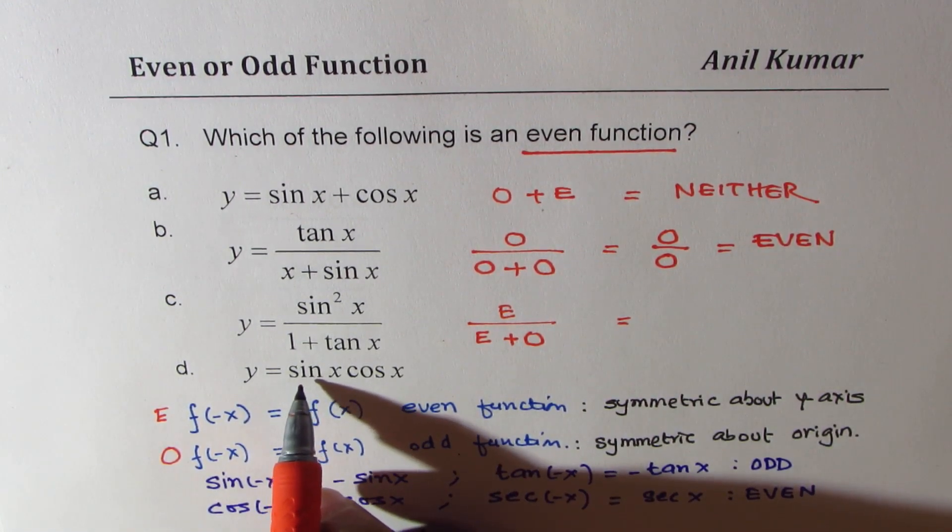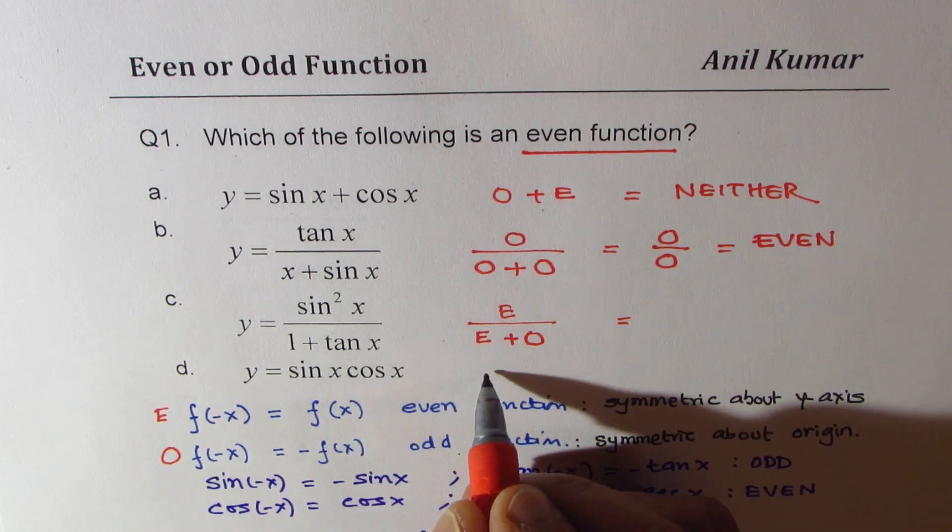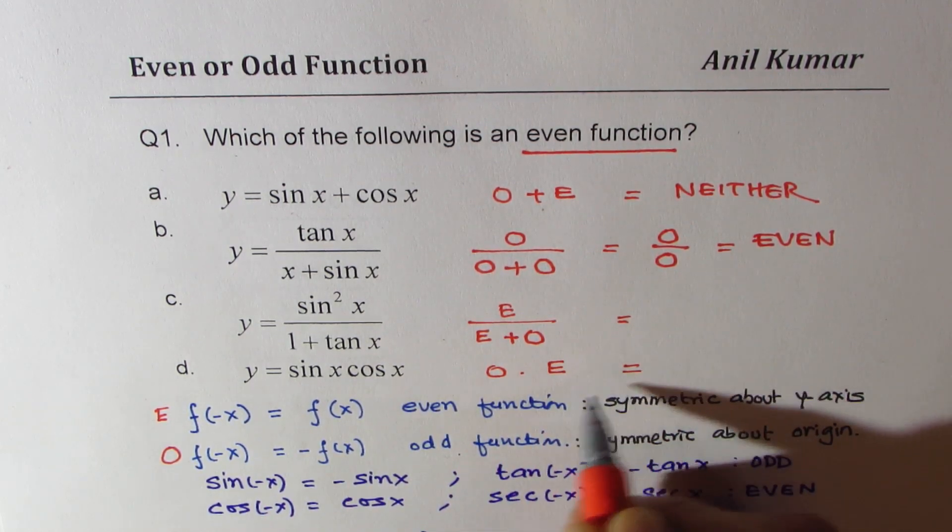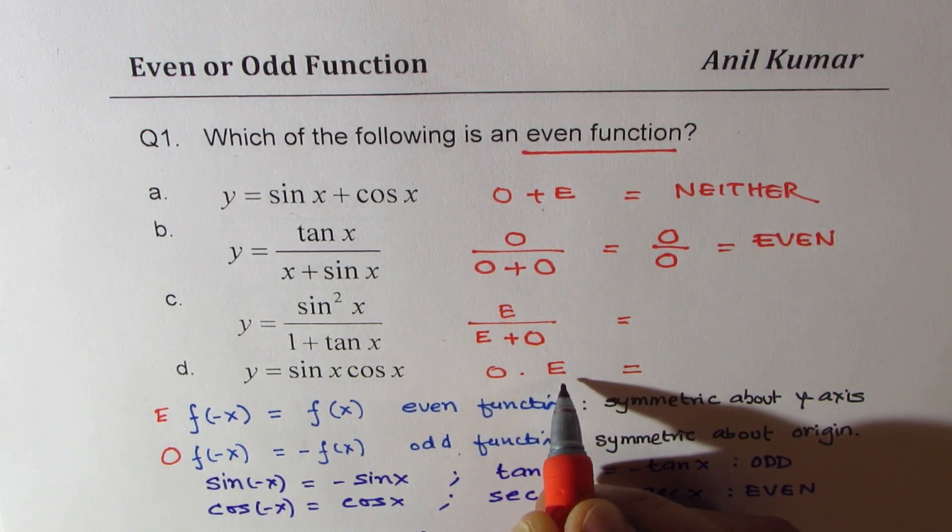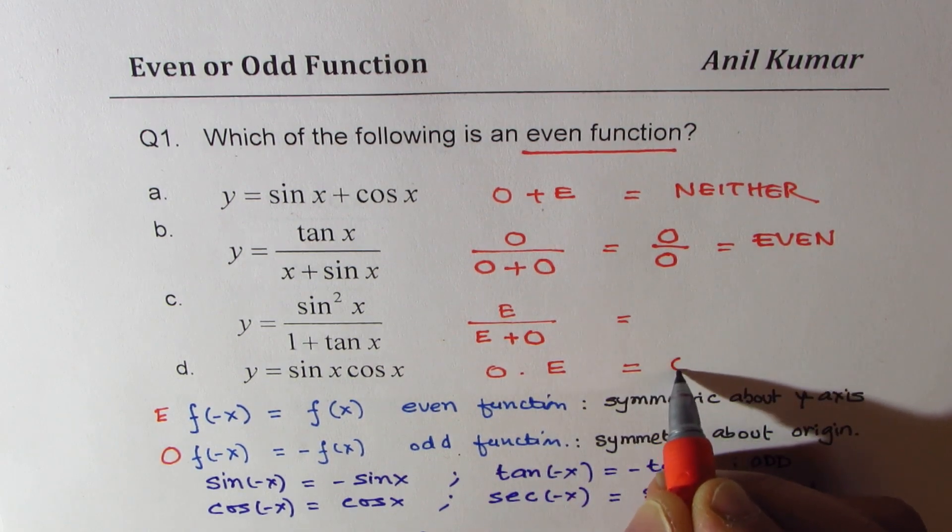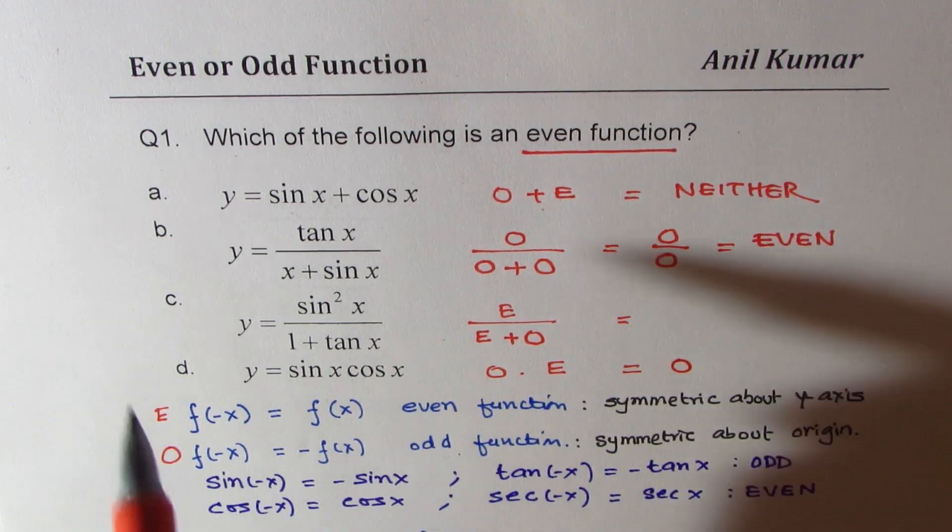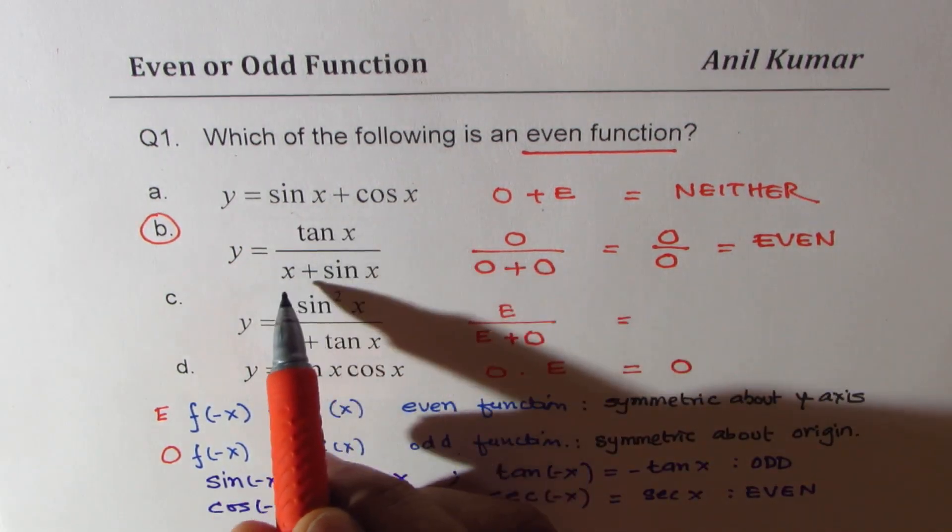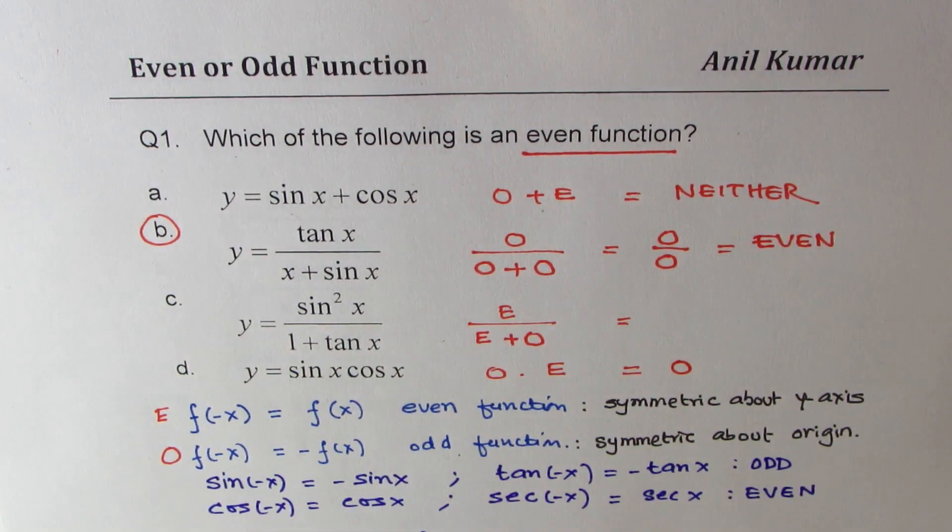Now let's look into the last one, which is odd times even. So when you multiply odd and even functions, in that case, what do you get? You get an odd function. So the answer here clearly is B, which is tan x over x plus sin x is an even function.